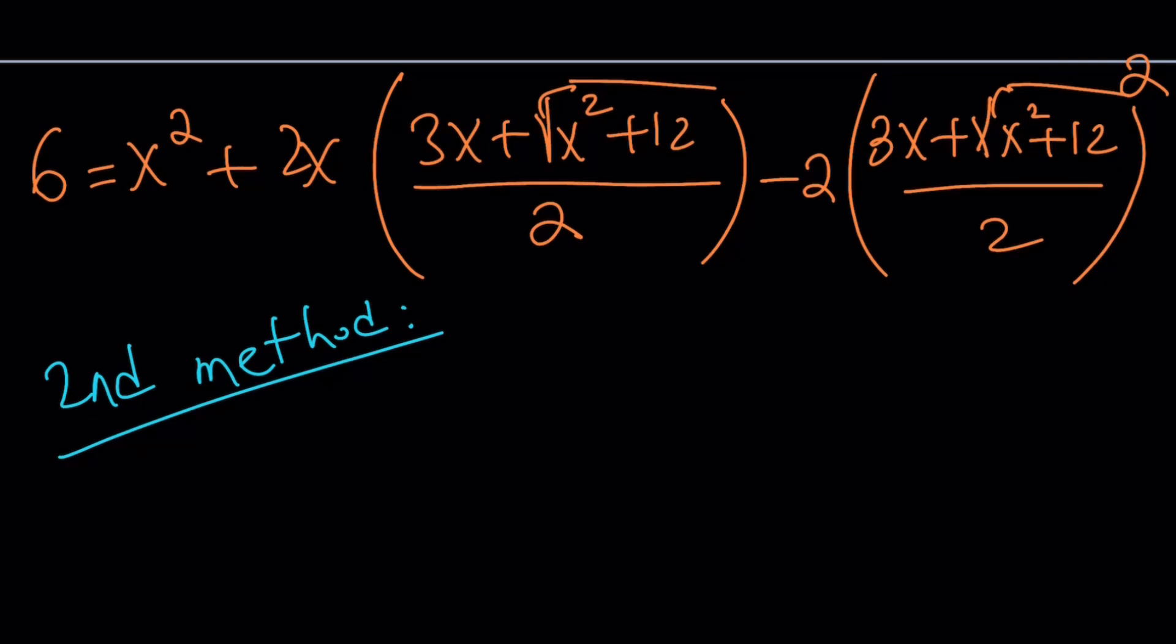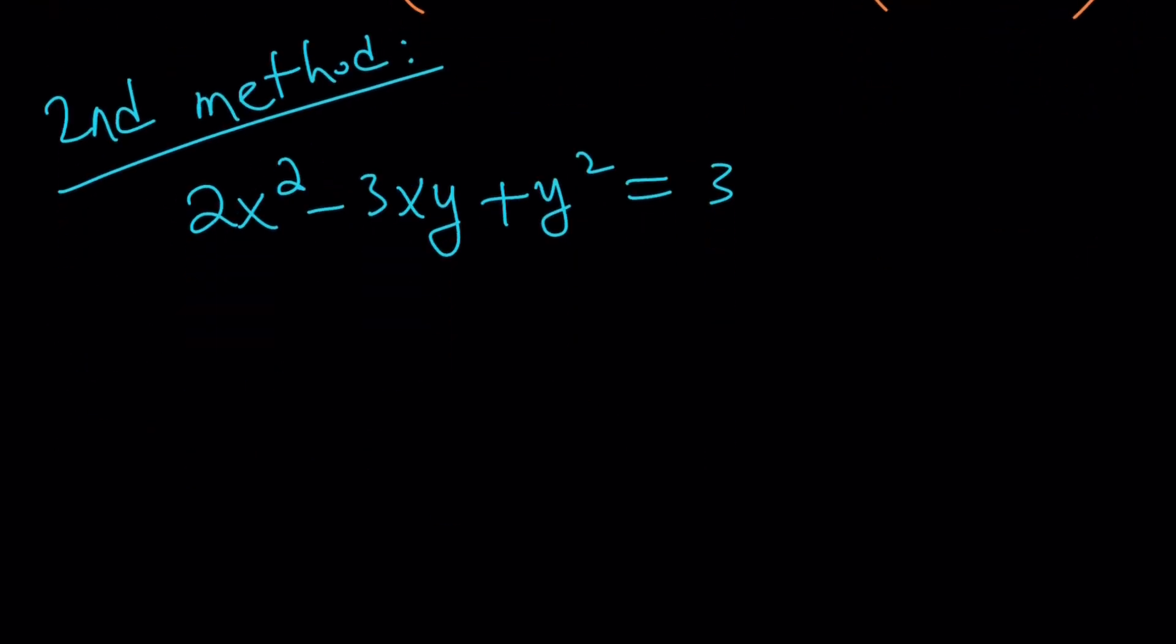So, let me rewrite the original system 2x² - 3xy + y² = 3. So you notice that even though there are two variables we could still use the quadratic formula. But the solutions will be more complicated. They're not going to be numerical.